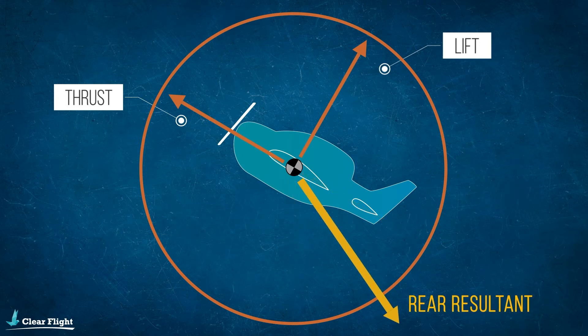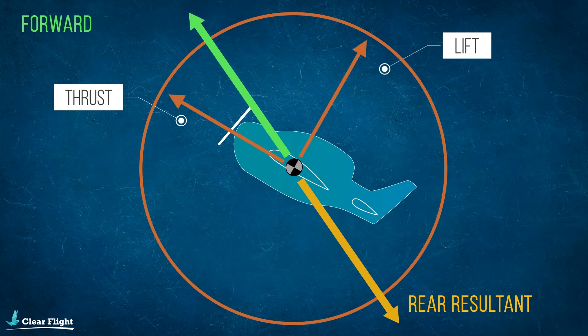In order for the aircraft to remain in a steady climb, an equal and opposite resultant force must be created by the combined effects of lift and thrust.